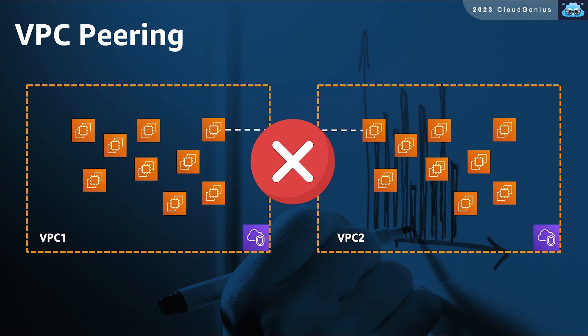What if you need this traffic to be permitted? Imagine you are a customer who has two VPCs for resources in two different branches — the main one and a remote branch. In the main branch, you have an Active Directory server, and in the remote branch, you have some Windows machines that need to communicate with their Active Directory, which is located in the main branch, in another VPC. How can you allow that traffic to happen?